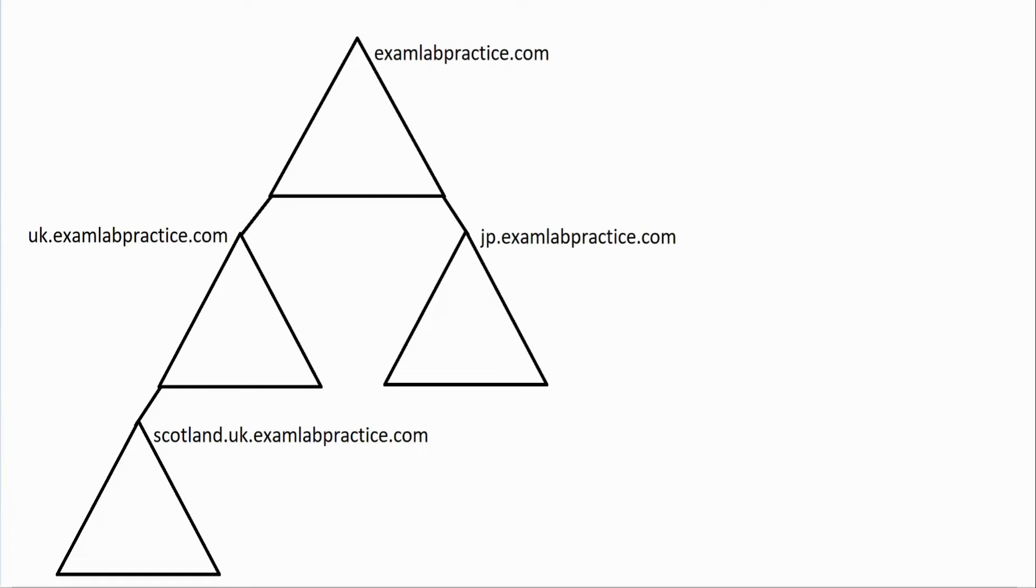So right now what you're actually looking at is four domains. One, two, three, four. You're looking at one tree and one forest. This is not two trees, it's not two forests. This whole thing is one tree. How do I know that these domains are part of the same tree? Because they share the parent's name. If they share the parent's name, which is examlabpractice.com, then they are part of the tree.